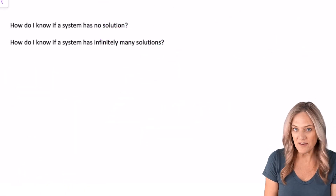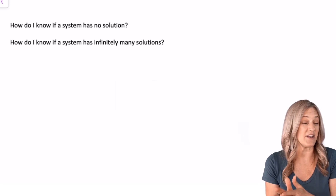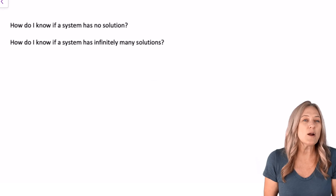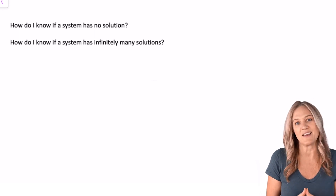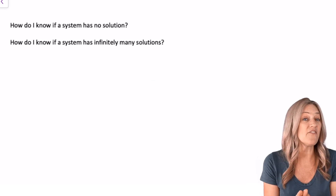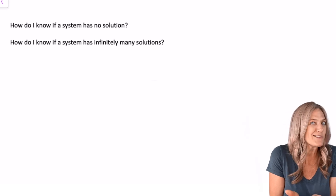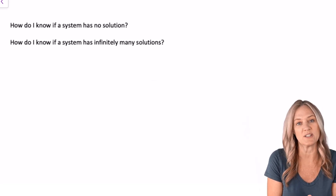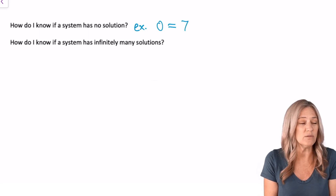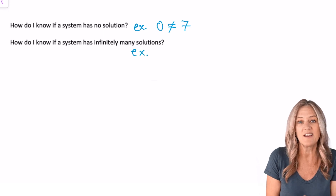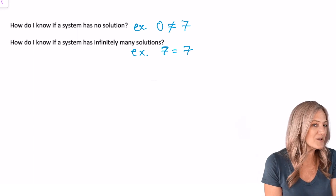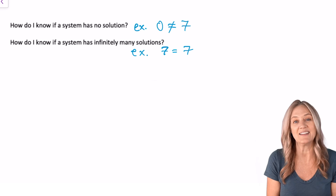Now let's think back to the beginning of the lesson — those figures where we decided if a system had one solution, infinitely many solutions, or no solution. How do we know algebraically? Similar to two-variable systems, if you get a false math statement like 0 = 7, then there is no solution. If you get a true math statement but the variables have added out — for example, 7 = 7 — then that means infinitely many solutions, like when all three planes intersect in a line.